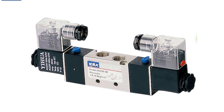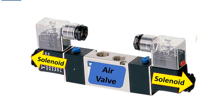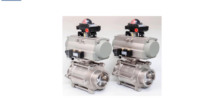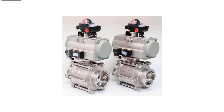A solenoid valve has two solenoids and an air valve, and the solenoids control the spool position. There's also another type — process valves. These are either motor-driven or air-driven, and they have sensors on them that feed back to the PLC to indicate whether the valve is open or closed.